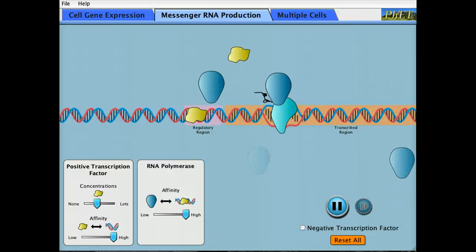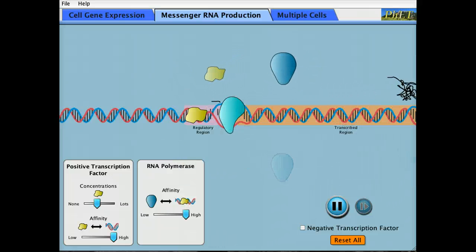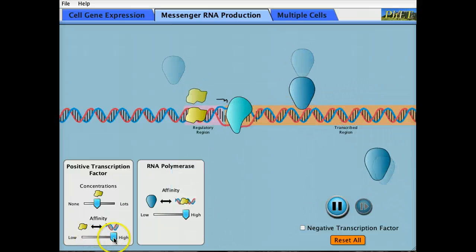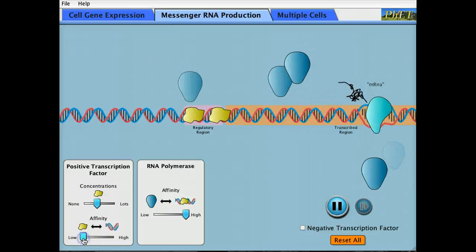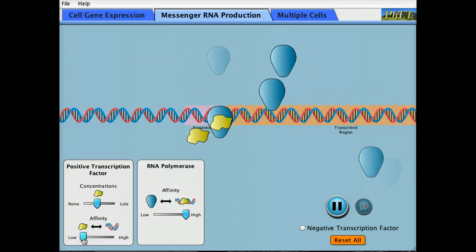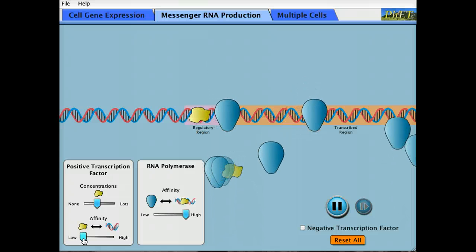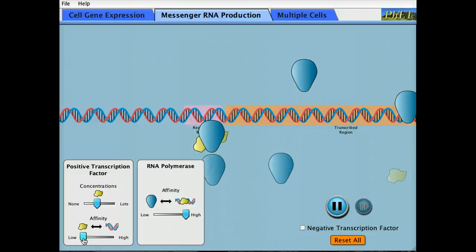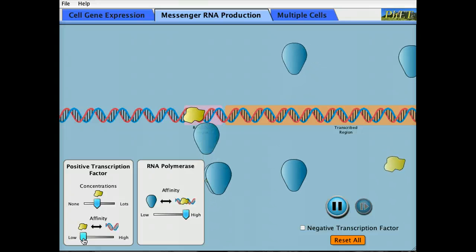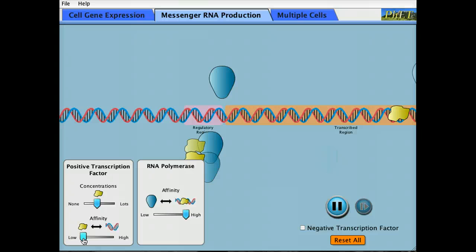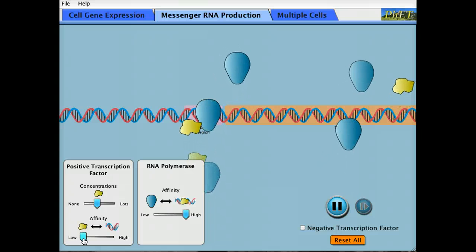We've been running this simulation with concentration of transcription factor in the medium range but a very high affinity. Let's reduce the affinity of the transcription factor for its binding site. Now you'll see it's coming on and off. It sits for a little while. It may or may not be able to activate a polymerase. Again, it's this stochastic nature of interactions at the molecular level that will give rise to noise.